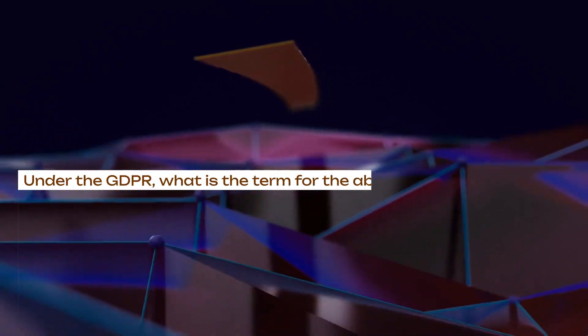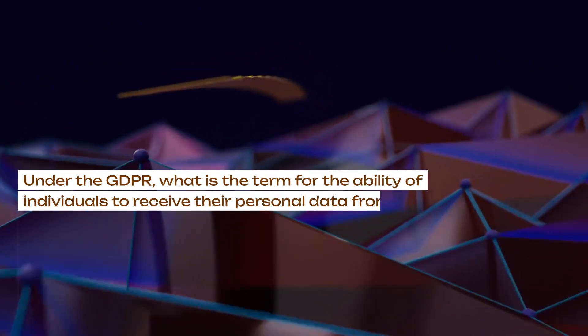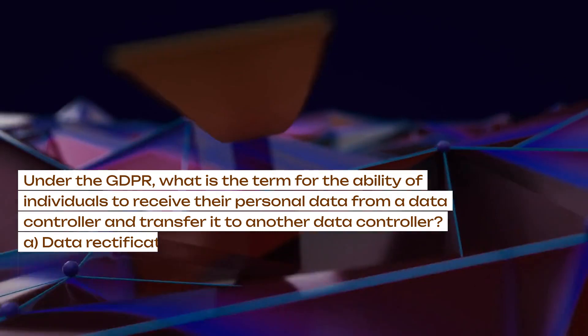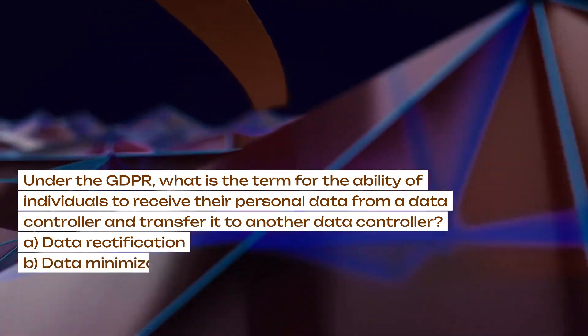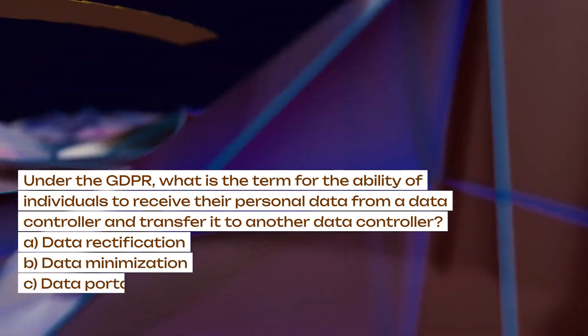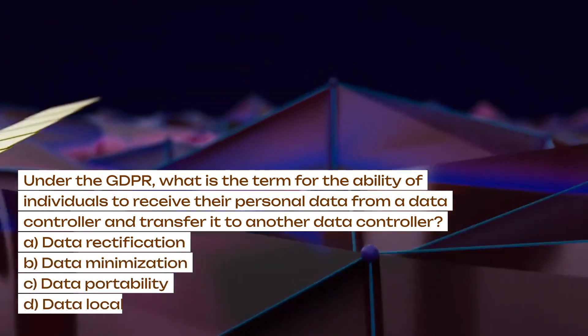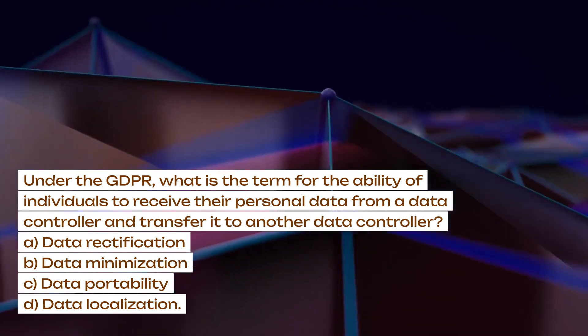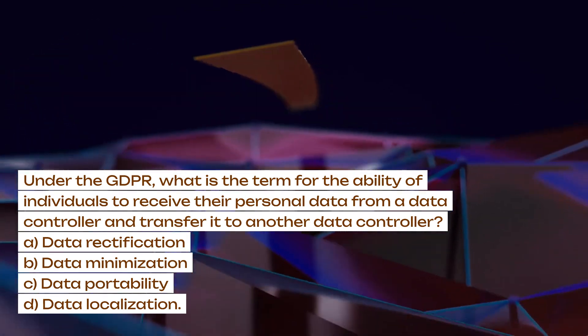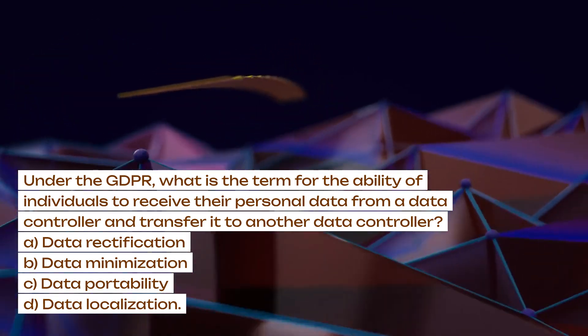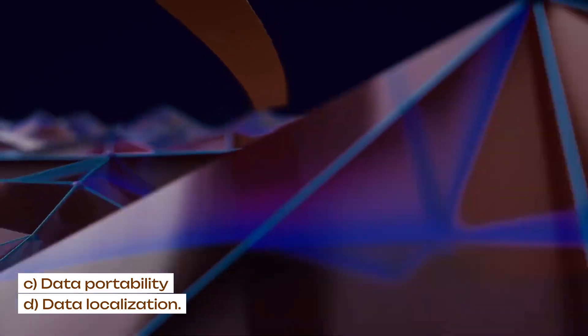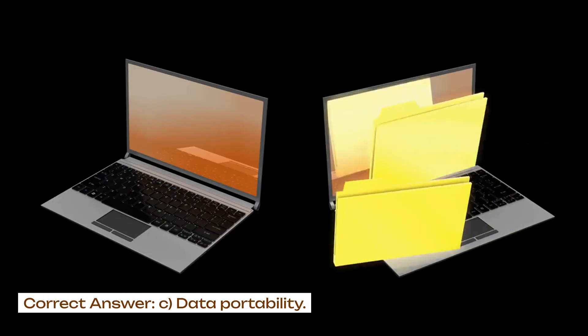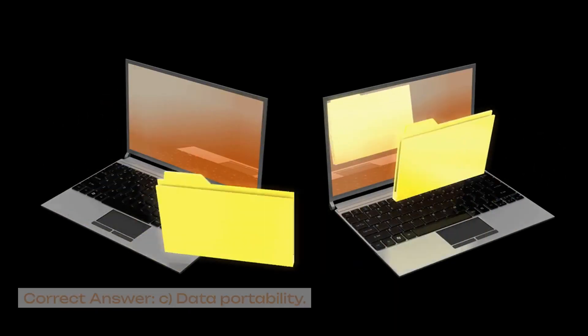Under the GDPR, what is the term for the ability of individuals to receive their personal data from a data controller and transfer it to another data controller? A. Data rectification. B. Data minimization. C. Data portability. D. Data localization. Correct answer: C. Data portability.